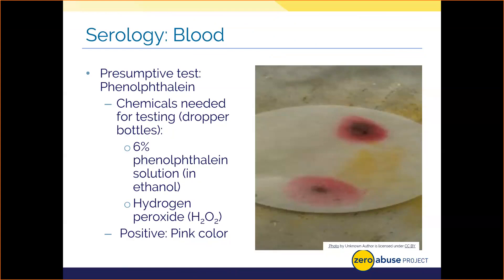The analyst needs a small amount of sample to test, acquired by taking a rubbing of a concentrated stain using sterile, DNA-free paper. Alternatively, cuttings or scrapings could be used. Using that small subset of sample, the analyst adds a drop of phenolphthalein and then a drop of hydrogen peroxide. If positive — if the sample is possibly blood — you get a pink coloration as a result.